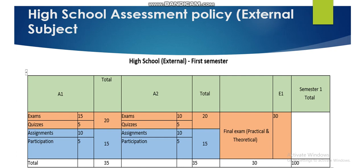The first semester will be out of 35, the second also out of 35, and your final will be out of 30, giving you a total of 100. The same structure applies to the second semester.